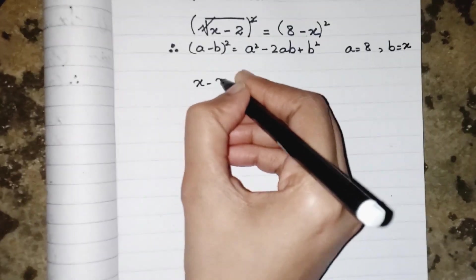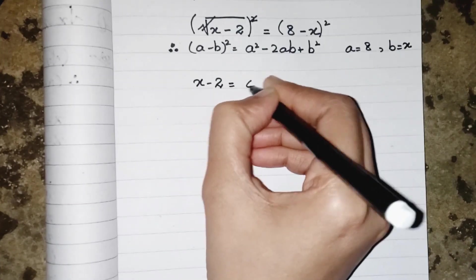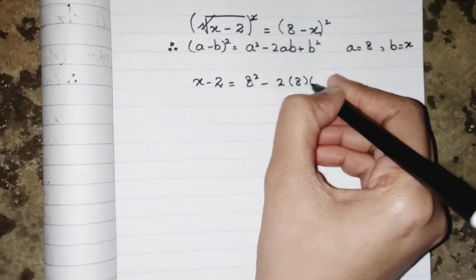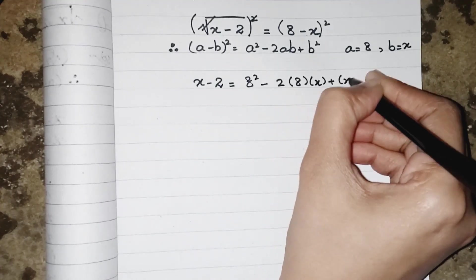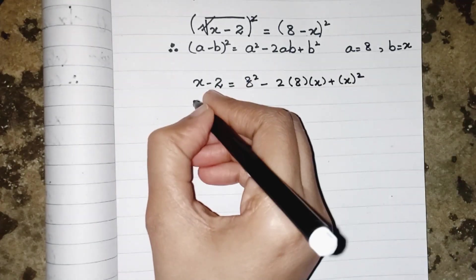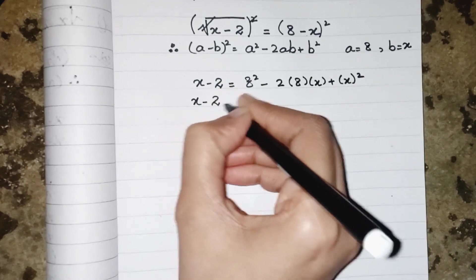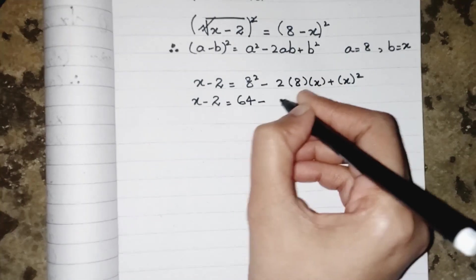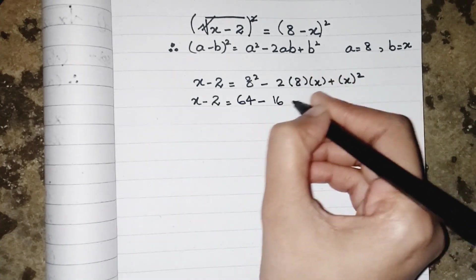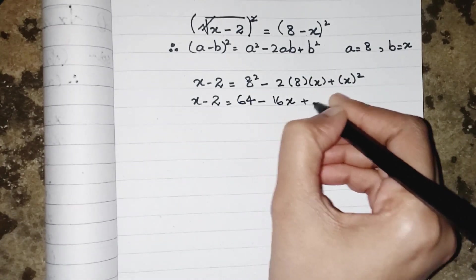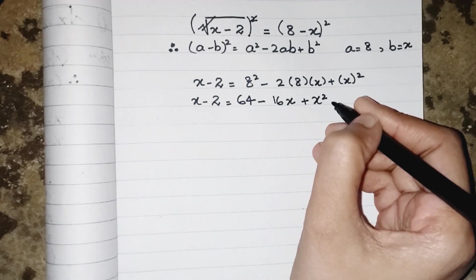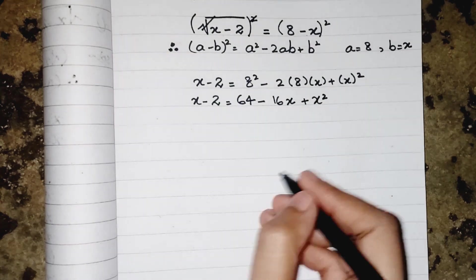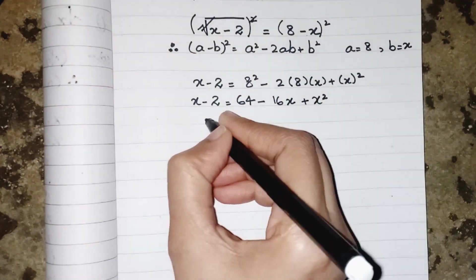Putting it into the formula: x minus 2 equals 8 squared minus 2ab plus b squared. x minus 2 equals 64 minus 16x plus x squared.